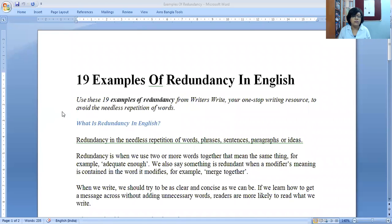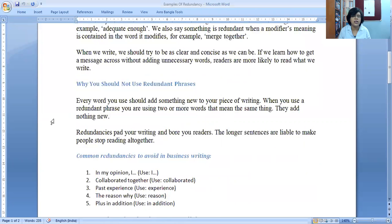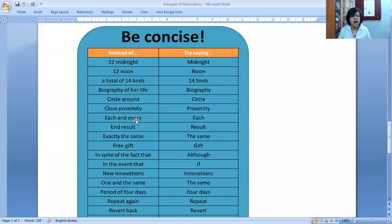Next comes examples of redundancies. I'll share the examples of redundancies with you. Examples of redundancy in English when you are writing or talking. In my opinion - and then use the word I. In my opinion, I is not necessary. Collaborate means to work together. Together again is not necessary. Past experience - experience means that you have gathered in the past, so it is not necessary.